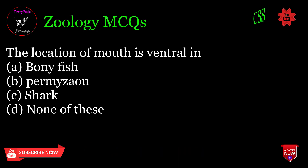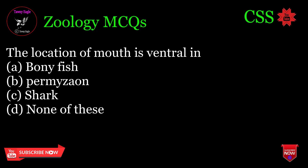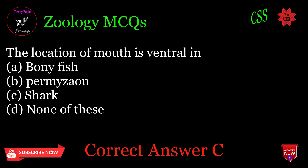The location of mouth is ventral in: A. Bony fish, B. Lamprey, C. Shark, D. None of these. Correct answer: C.